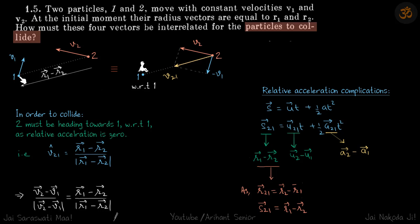We are given two particles with velocities v₁ and v₂ and their positions are r₁ and r₂. We need to find the condition for them to collide.